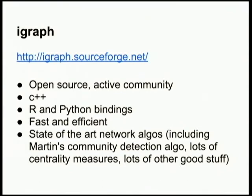Here's the cool piece: all that stuff about Markov processes and using information theory to compress the description of the Markov process — you don't have to worry about it, because it's all in this library, iGraph, written in C++. It has bindings to Python and R, it's very fast and efficient, and it has a lot of other state-of-the-art network algorithms including Martin's algorithm. All I really did was find this library, try all the different community detection algorithms it has, find that this one worked the best, and then afterward research how it was actually working.